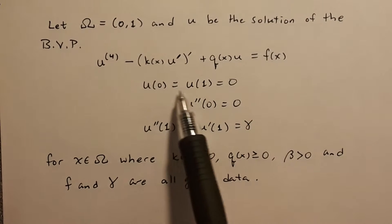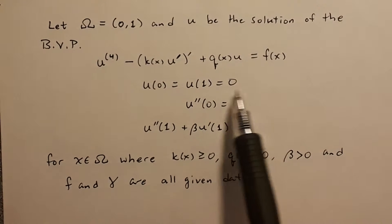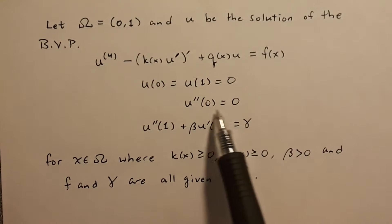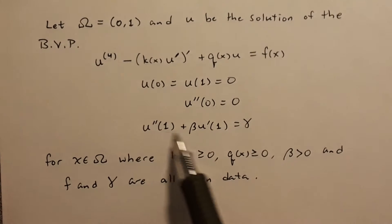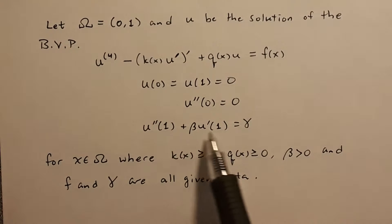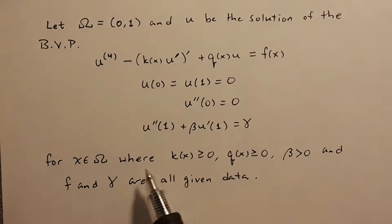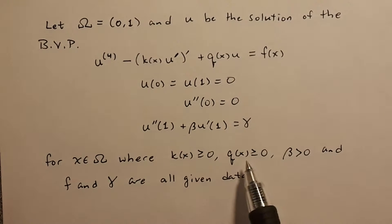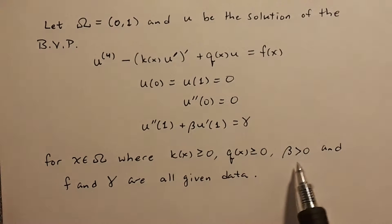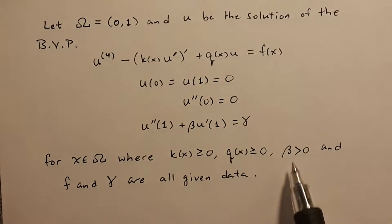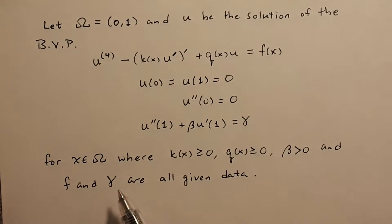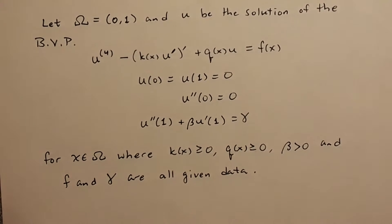We have that u(0) equals u(1) is equal to 0. The second derivative at 0 is equal to 0, and then we have this other type of boundary condition. k is a non-negative function, q is a non-negative function, beta is a positive real number, and f and g are given values. f is a function and gamma is some number.